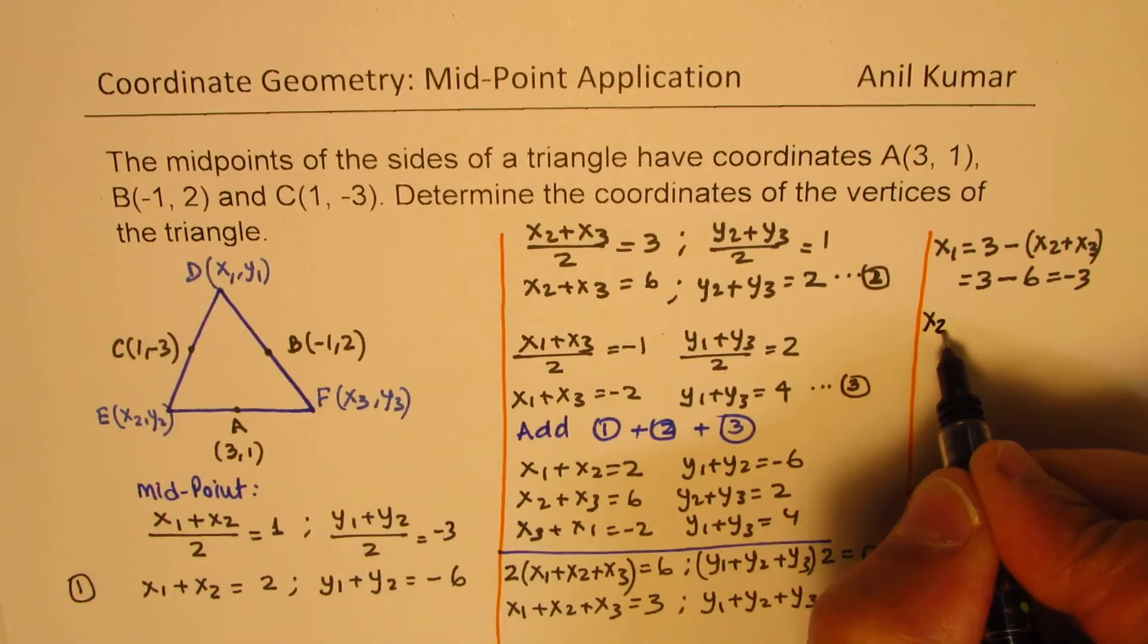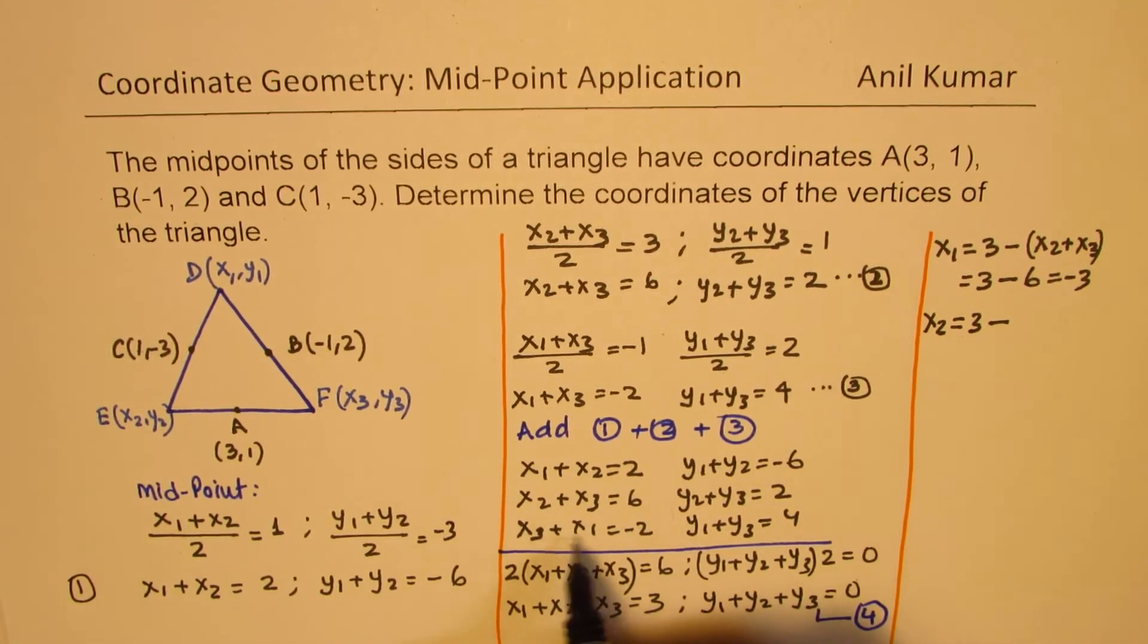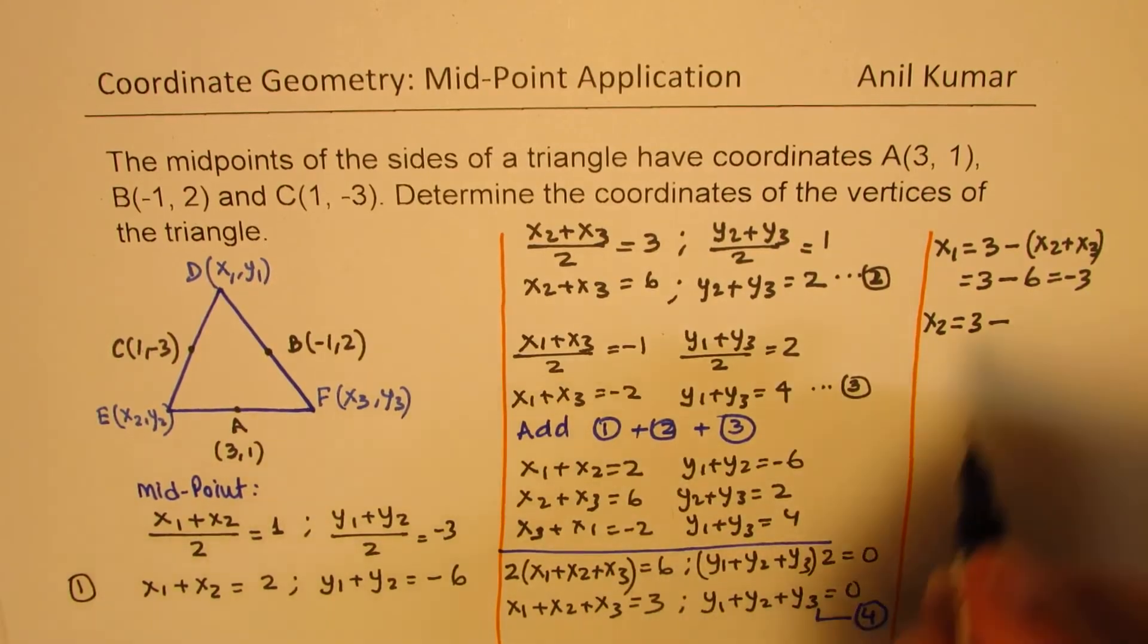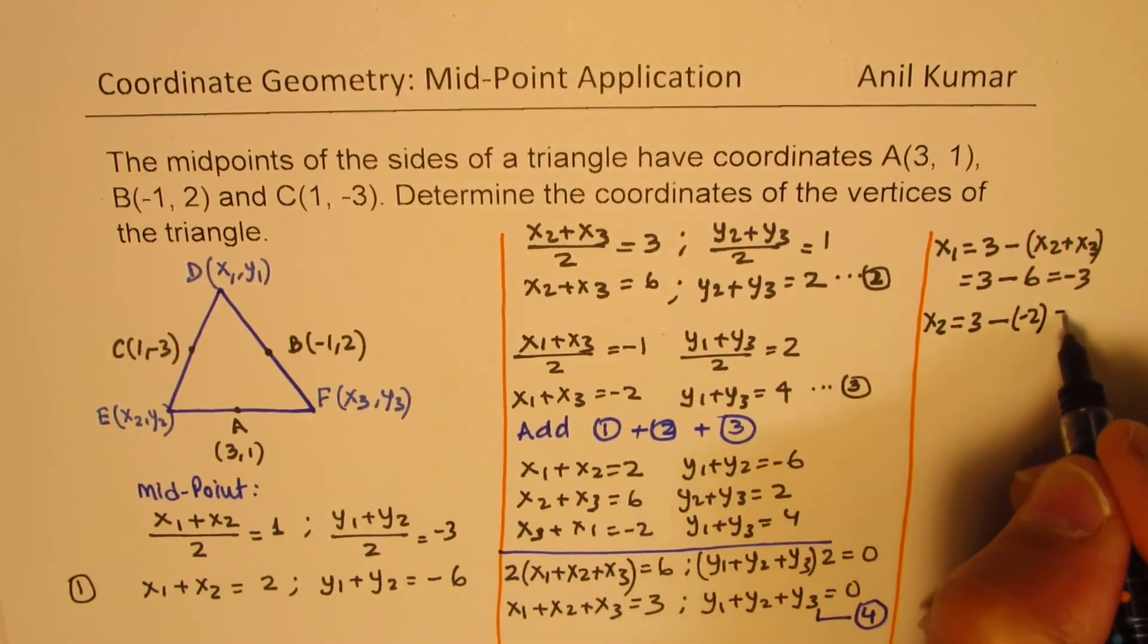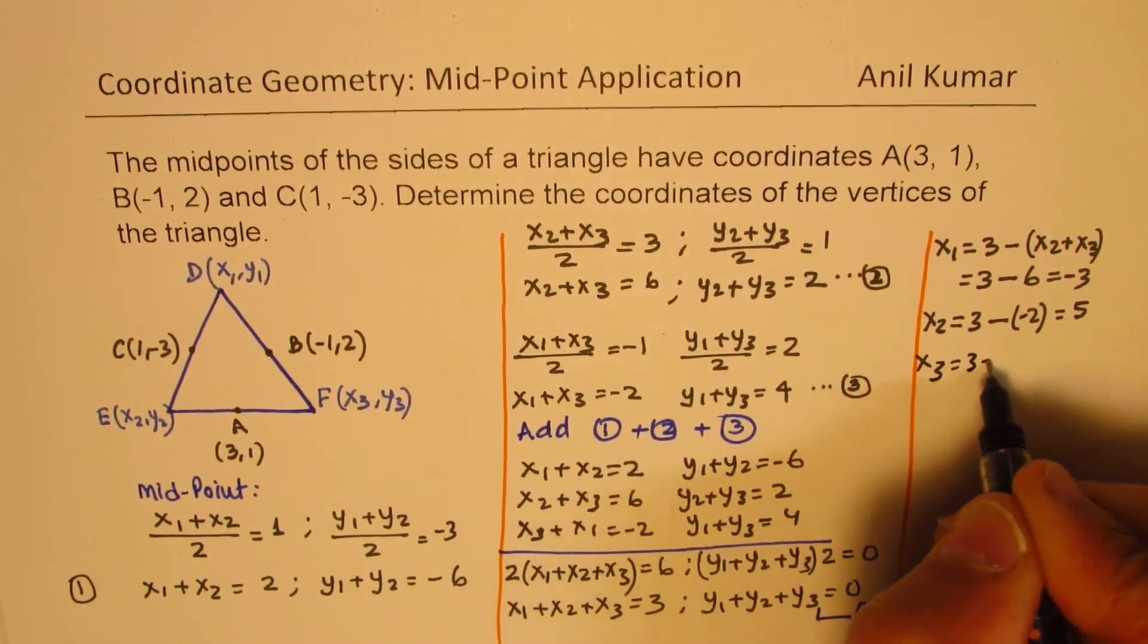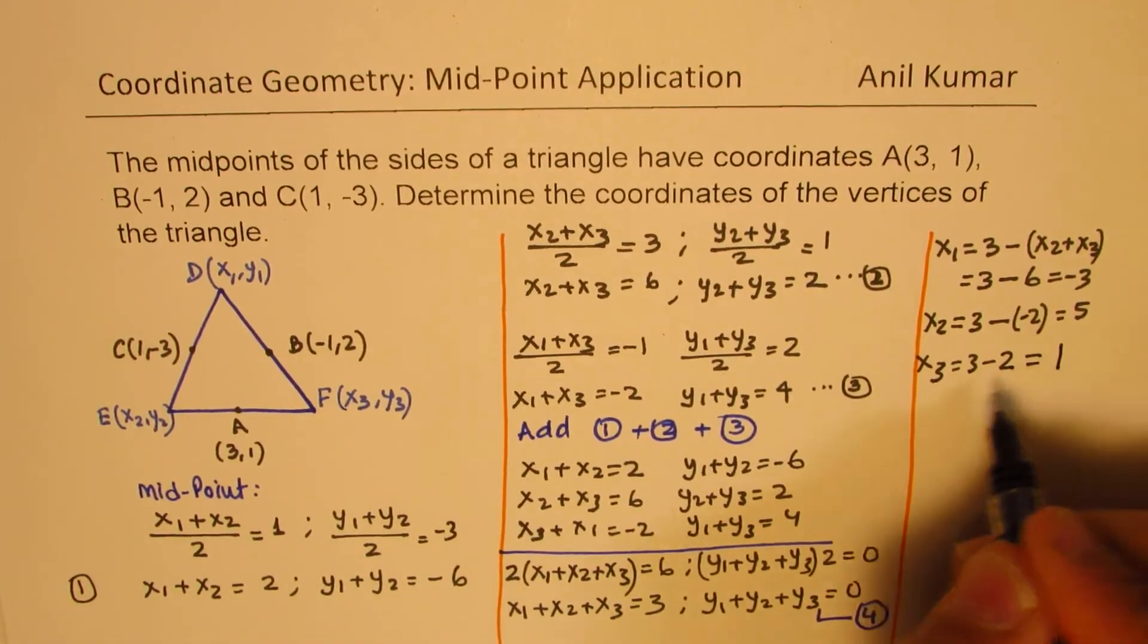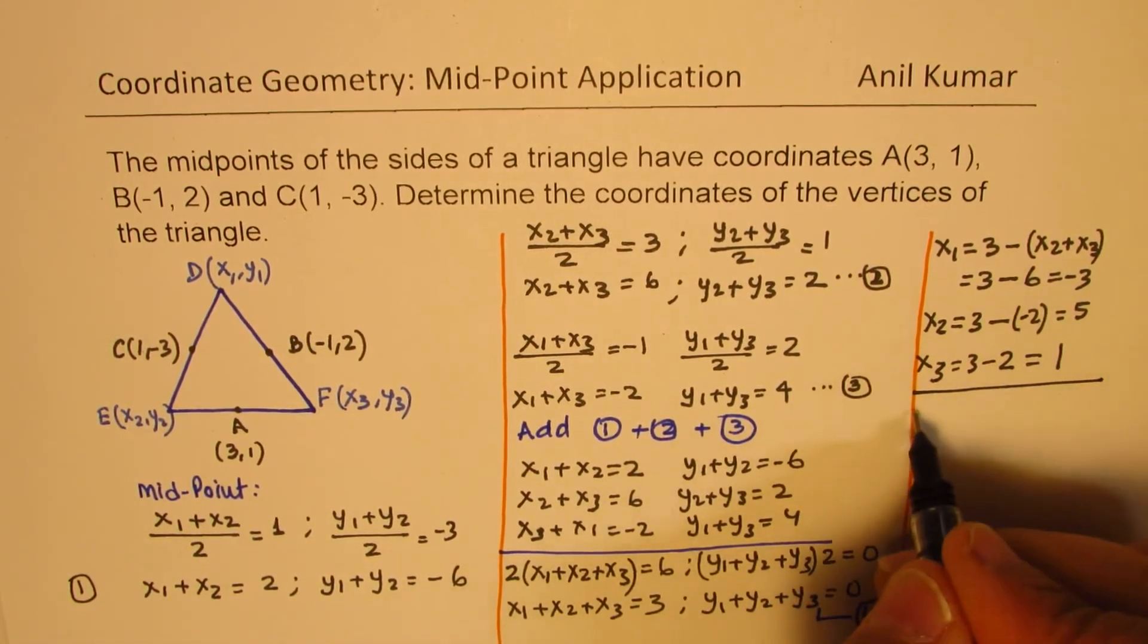Similarly, I can say what is x₂? x₂ will be 3 minus x₁ and x₃. So which is -2. So when I do minus -2, I get 5. And x₃ will be 3 minus x₁ and x₂ sum, which is 2. So we get 1. So we get one set of x values.